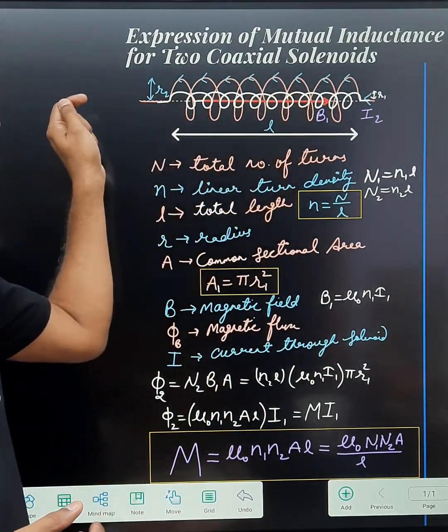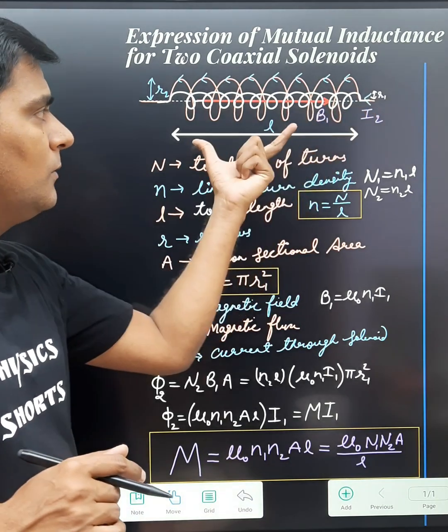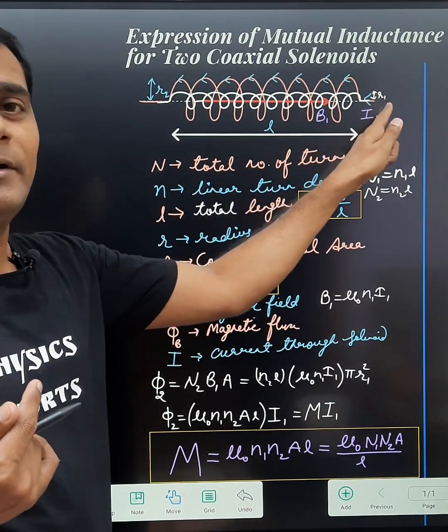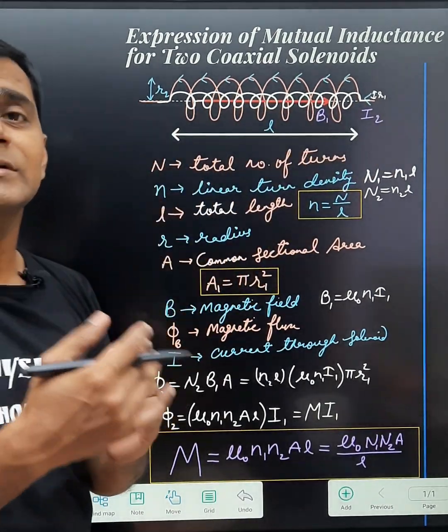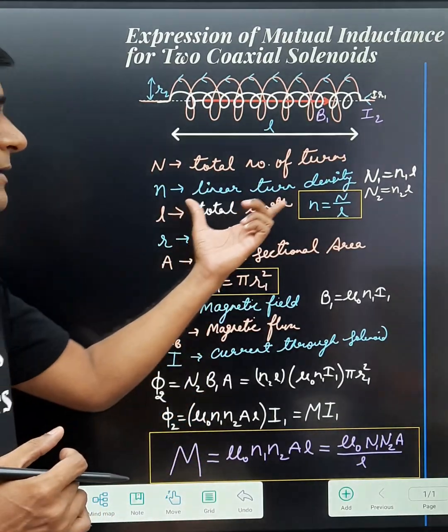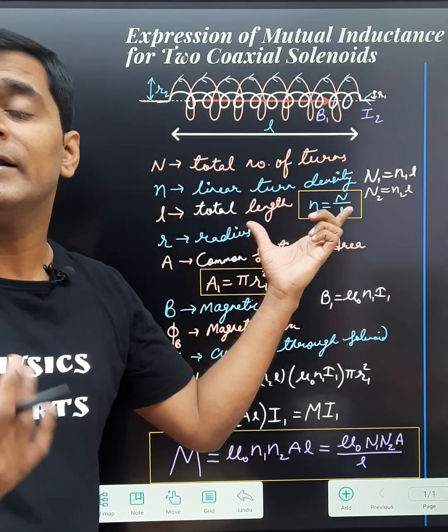So we are taking two solenoids which are placed coaxially. Their length are common and that is L, radius are different R1 and R2, number of turns are also different, and linear turn density, which is number of turns per length, is also different.